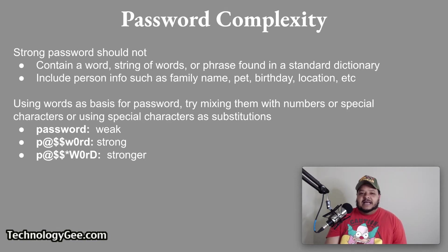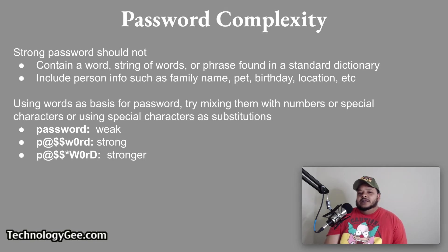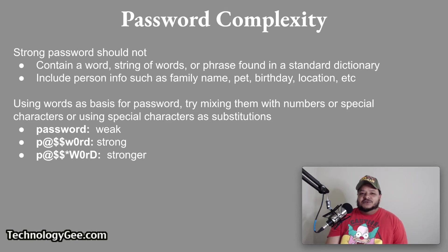For example, the word 'password' would be considered a weak password because it can easily be found in a dictionary. To make it slightly stronger, you would change the A to an at sign, the two S's to dollar signs, the O to a zero, and capitalize the W. To make it even stronger, you would add an asterisk in between the dollar sign and the capital W.